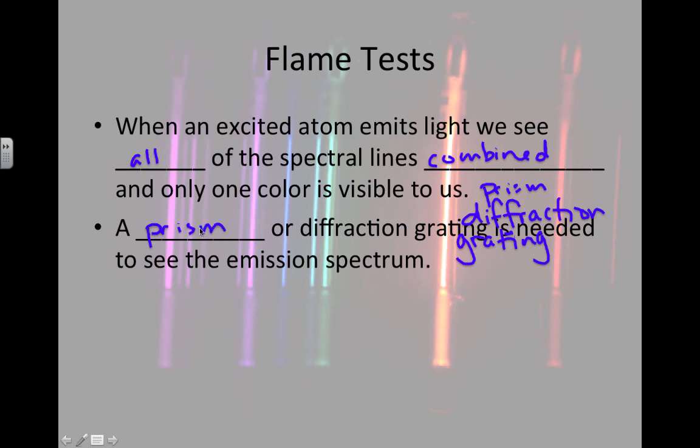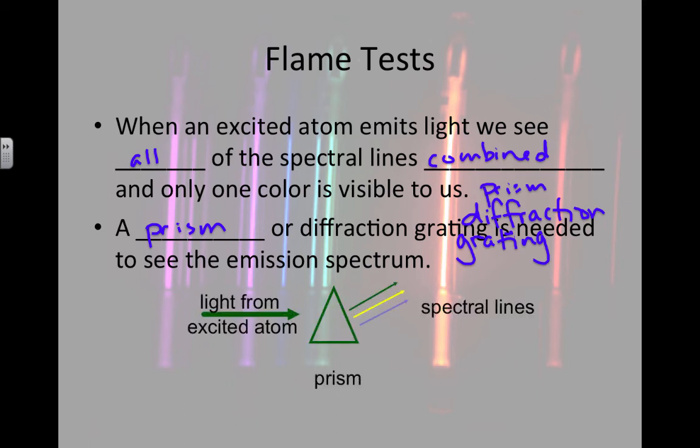If we want to see the emission spectrum, that's what we have to do. We have to break apart all of the blended together colors, the colors that have combined. We have to break them apart. And a prism or the diffraction grating is used to do that. Because the light enters the prism and the prism breaks it apart into the different wavelengths.